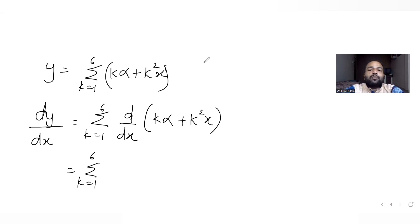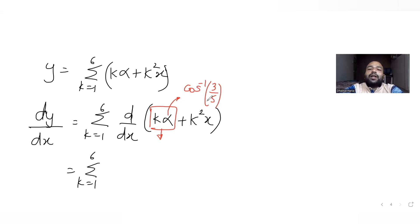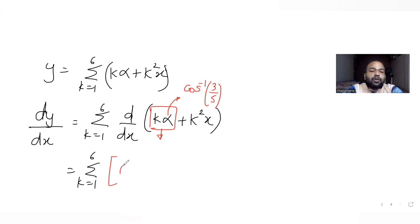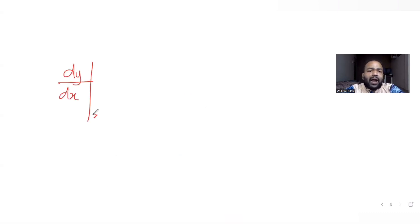Differentiating: kα is a constant — α is cos inverse of 3/5, which is a constant value — so its derivative is 0. For k²x, k² is constant and the derivative of x with respect to x is 1, giving k². So dy/dx equals summation of k equal to 1 to 6, k².